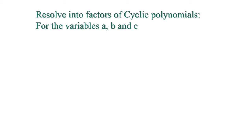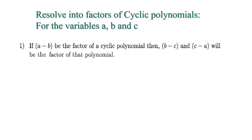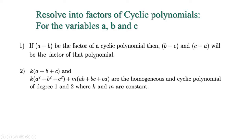In this class I am going to discuss the factorization of cyclic polynomials — resolving into factors of cyclic polynomials for variables a, b, c. We know from the previous class that a cyclic polynomial has exactly three variables. To factorize cyclic polynomials easily, you have to follow three rules. First: if (a − b) is a factor of a cyclic polynomial, then (b − c) and (c − a) will also be factors of that polynomial.